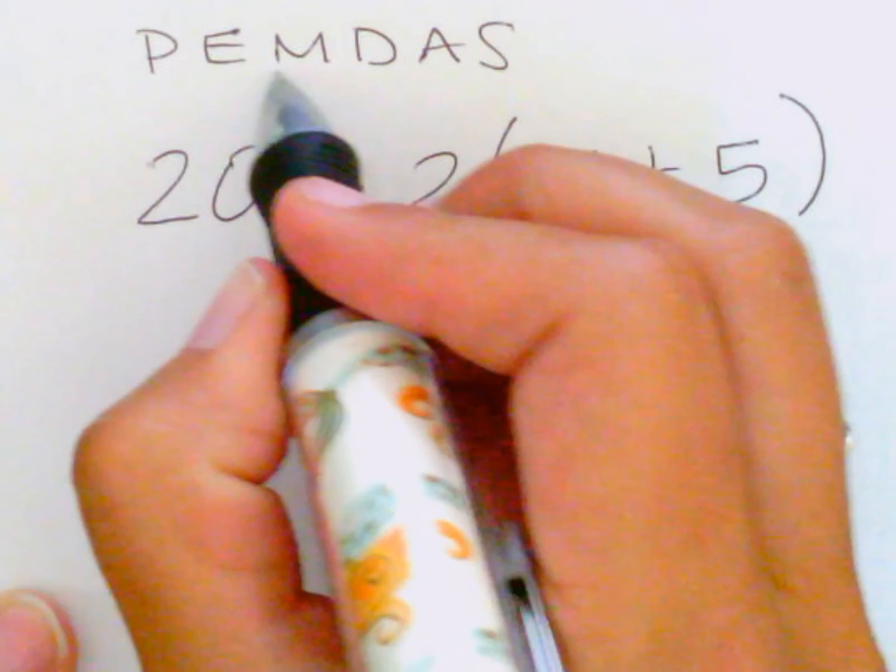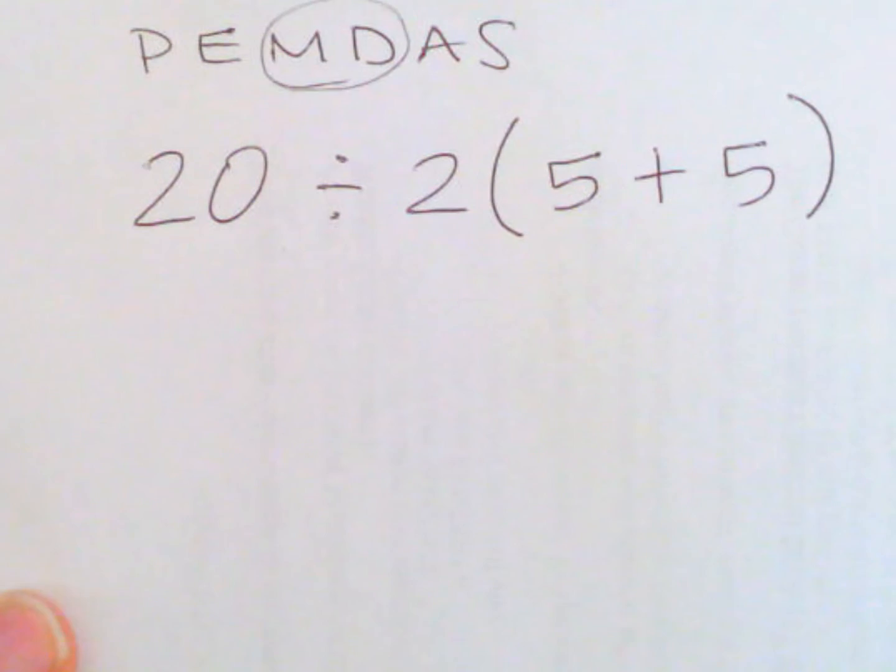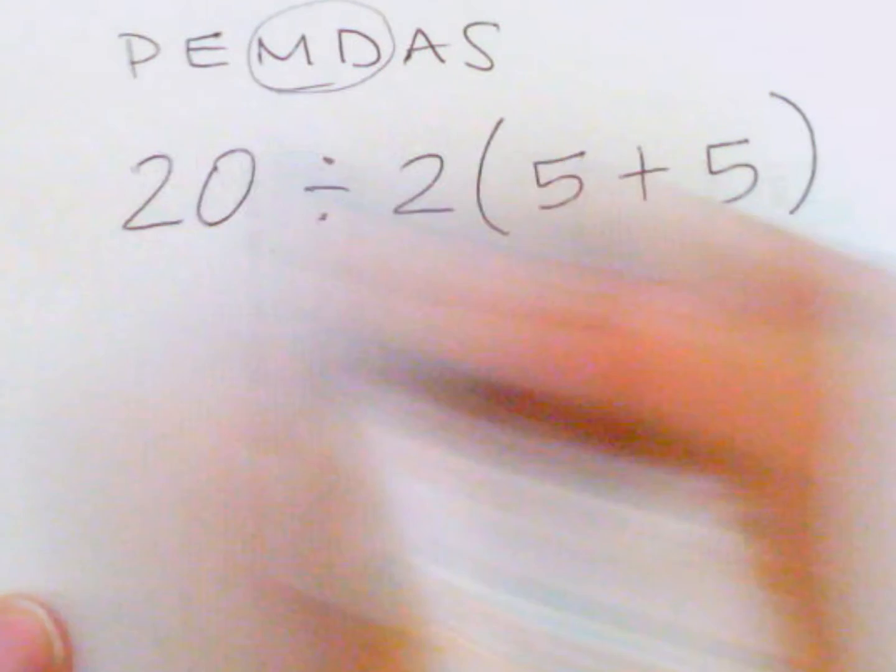Now, when you're looking at multiplication and division, this is done left to right. So let's begin first, because we have parentheses we need to do first.